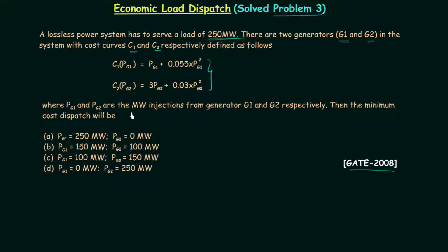PG1 and PG2 are the megawatt injections. They are simply the power produced by generator G1 and generator G2, and we have to find out the minimum cost dispatch.